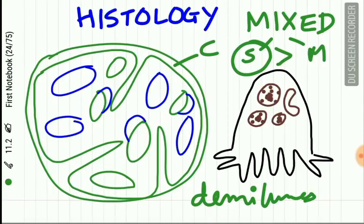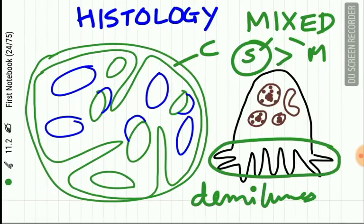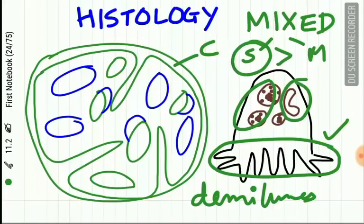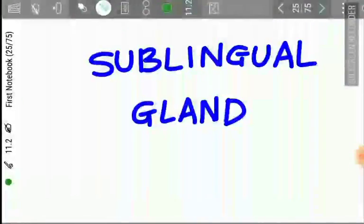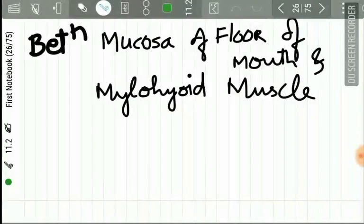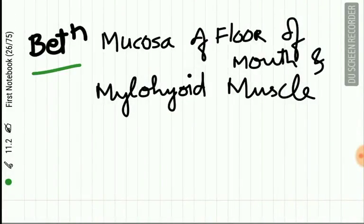The submandibular serous cells are slightly different from parotid serous cells — the basal and lateral areas of the plasma membrane show numerous foldings. The serous granules have a granular matrix and a dense core, and are sometimes crescent or C-shaped.